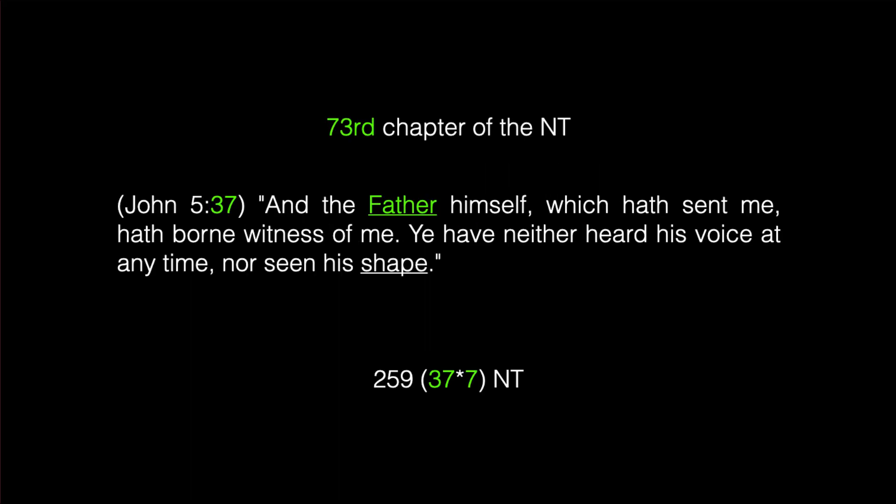Let's look at John 5:37: 'And the Father himself which hath sent me hath borne witness of me. Ye have neither heard his voice at any time nor seen his shape.' Notice we're in the 73rd chapter of the New Testament — 73 being the fourth star number — and the 37th verse, which is the third star number. The word 'Father' — case sensitive — occurs 259 times in the New Testament of the King James Bible, that is 37 times 7. The number 7 is also a figurate number — the second centered hexagonal number — it forms a hexagon. Notice the phrase 'seen his shape.'